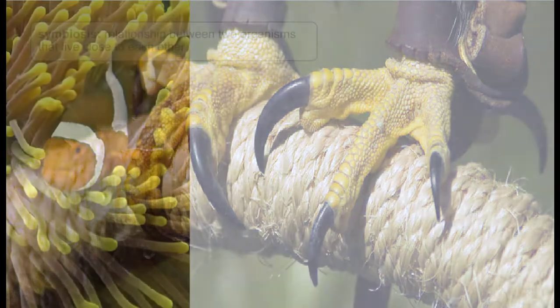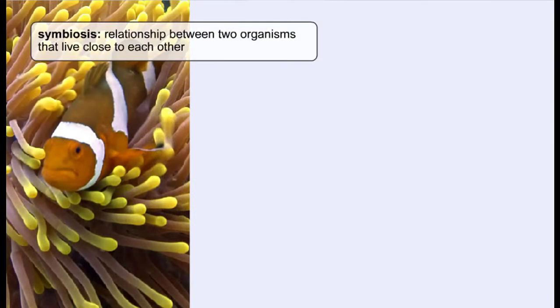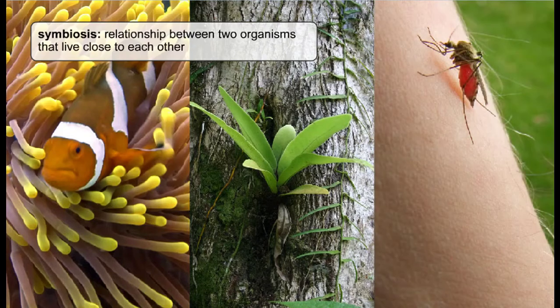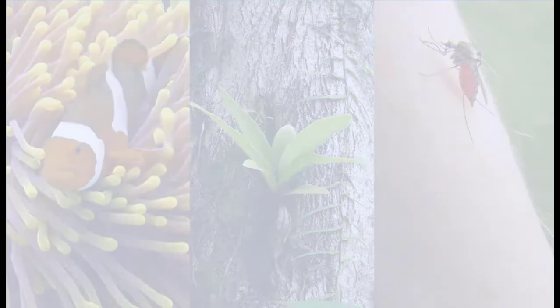The term symbiosis is used to describe relationships between species in which two organisms are intimately associated with one another. In particular, there are three different types of symbiosis.